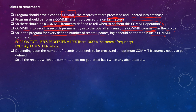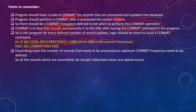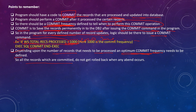For every defined number of record updates, logic should be there to issue a COMMIT command. For example, we are committing after updating 1000 records — when the counter becomes 1000, 2000, 3000, and so on. Depending upon the number of records that need to be processed, an optimum commit frequency needs to be defined so that it takes less time. All records which are committed do not get rolled back when any event occurs.